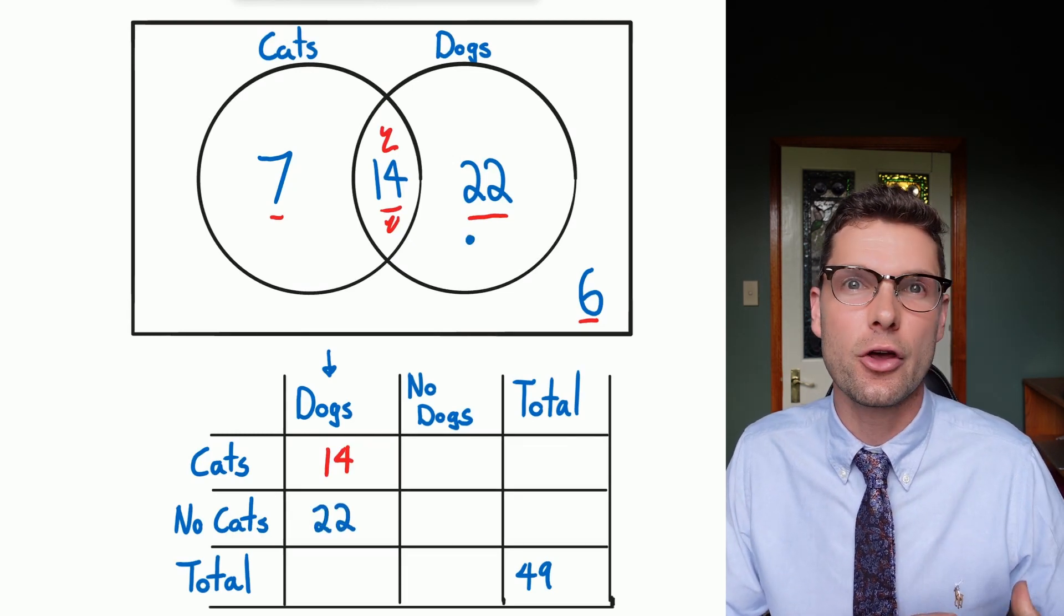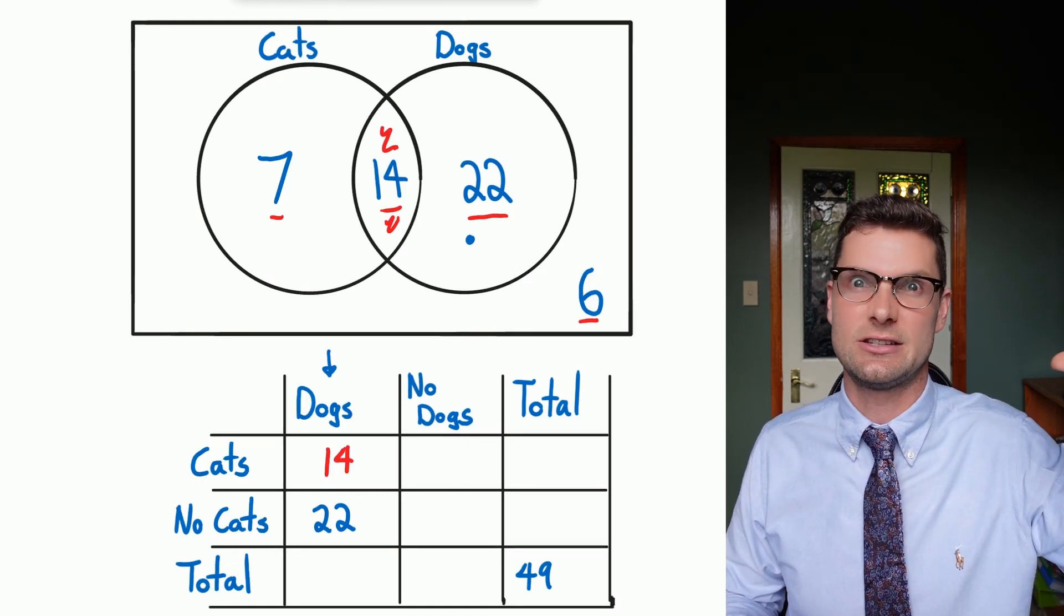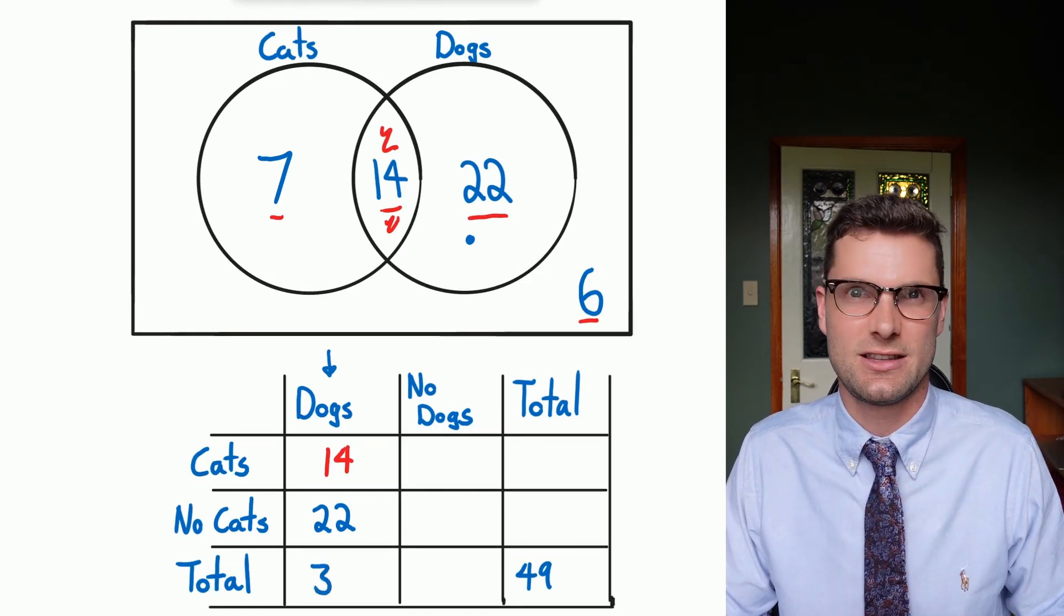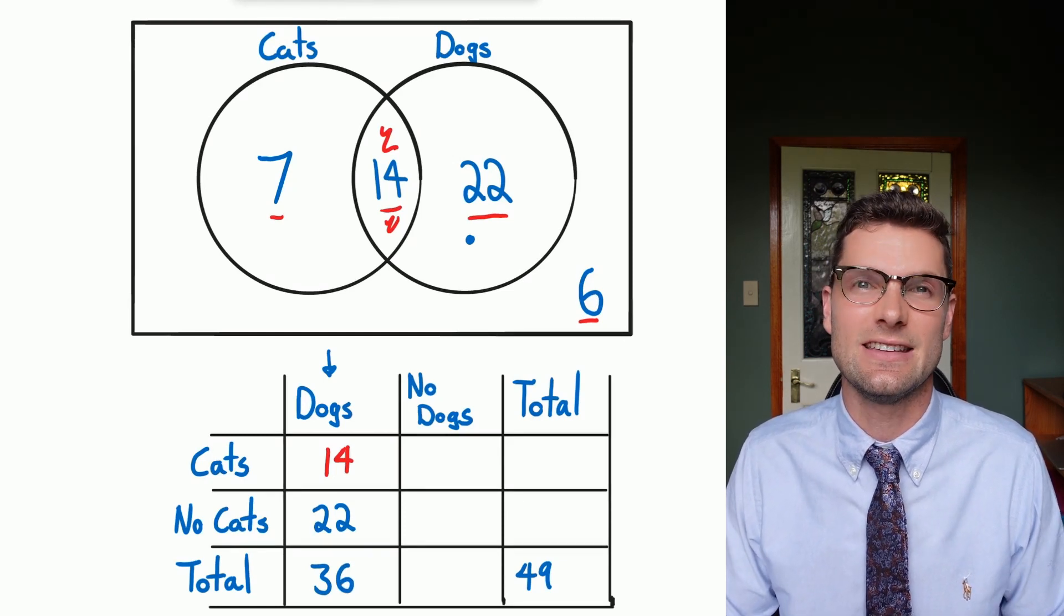And now because I've got those two pieces of information I can work out how many people have a dog in total. It's the 14 that have both plus the 22. So I've got 36 people that have a dog in this survey.